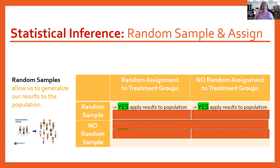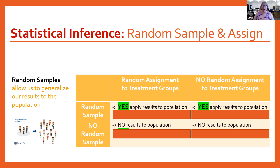If I don't have a random sample, then I can't apply these results to the population without a lot of extra work. That's an area where you would hire a statistician to work with you on that. So that's what random samples get us.